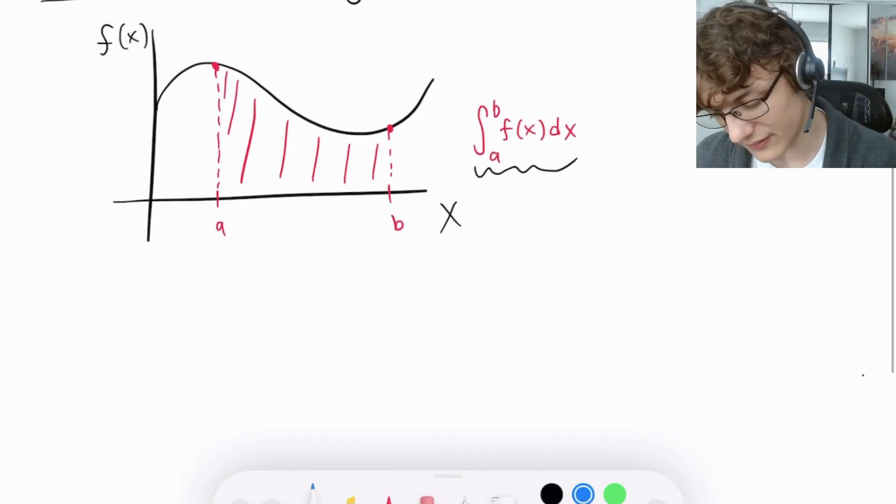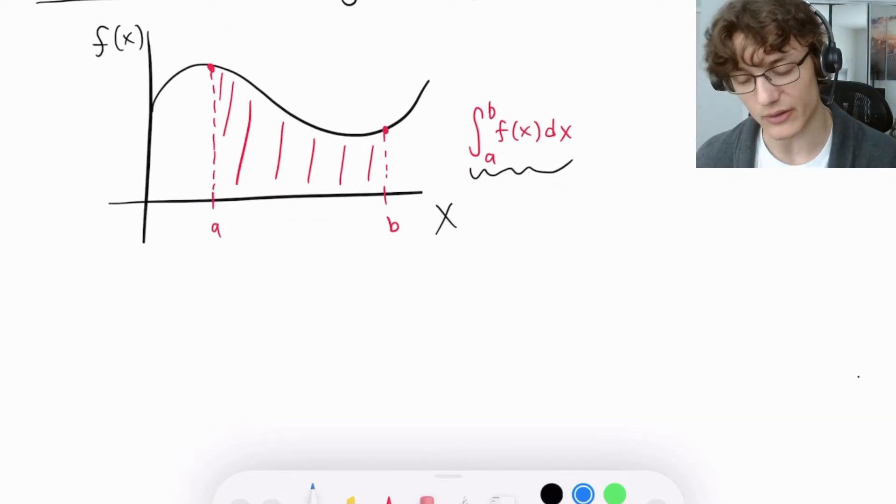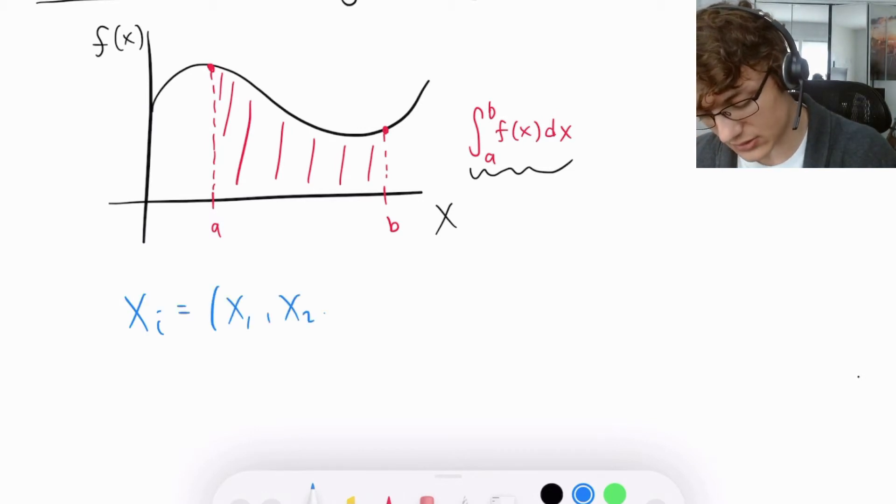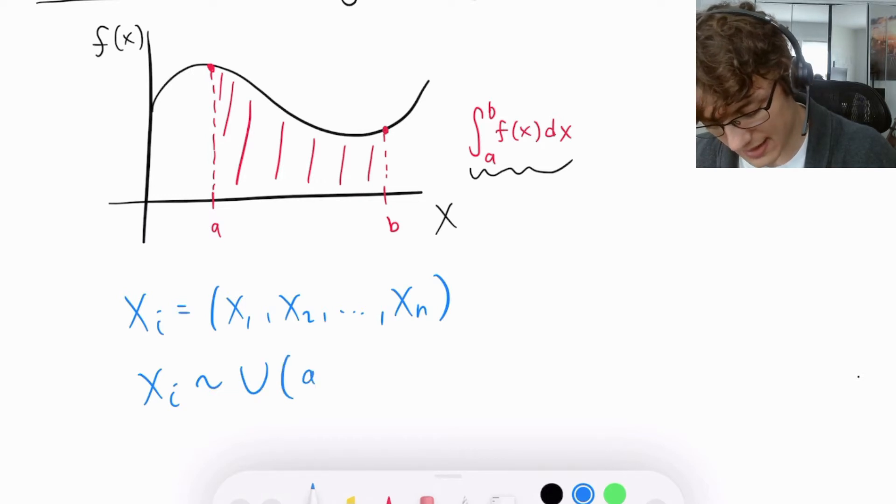What we can do to find the area underneath this curve if we can't solve for it analytically is start by randomly sampling points in the domain. So we can say Xi = (X1, X2, ..., Xn), where Xi is distributed uniformly from a to b.